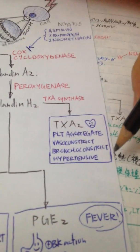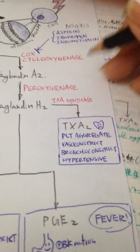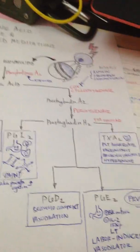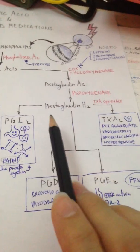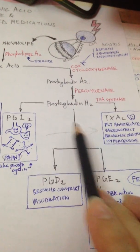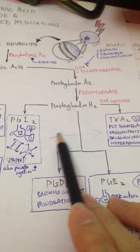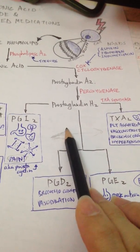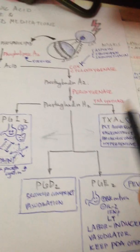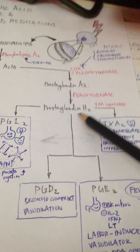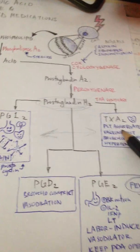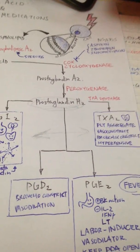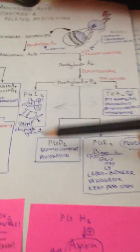If you observed, prostaglandin I2 and thromboxane A2 are sort of like opposites of each other. It's quite interesting that these two things that are opposite in action come from the same source, which means that these two things have to be in equilibrium for our body to function. You should note that because I'm going to come back to it later.